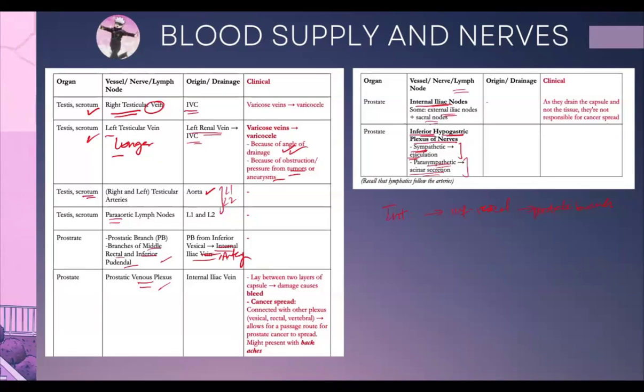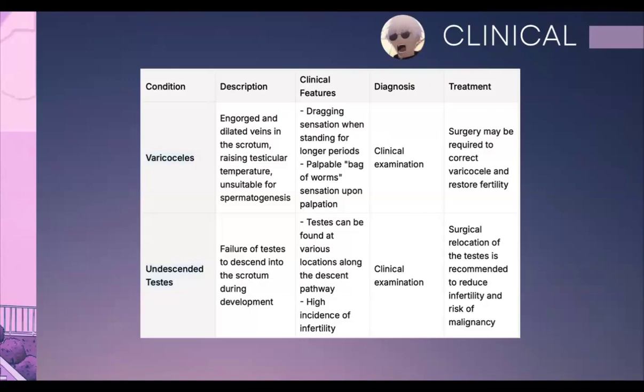Now we come to some clinical cases. Remember varicocele — patients have a dragging sensation and on examination the appearance looks and feels like a bag of worms. It usually requires surgery to restore fertility because higher temperatures are not suitable for spermatogenesis. I had put a star on the embryology part — that's undescended testis.